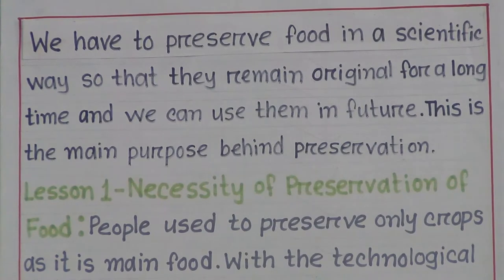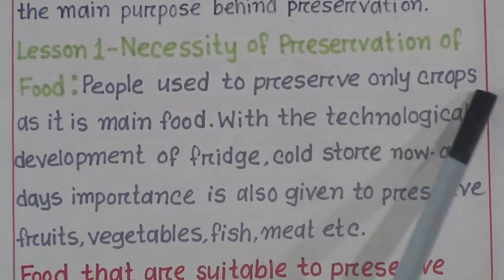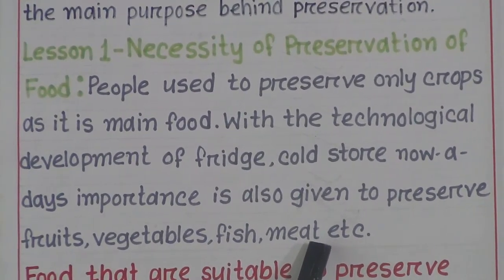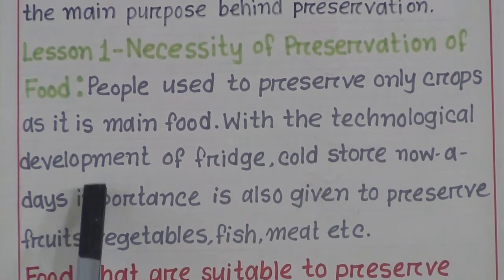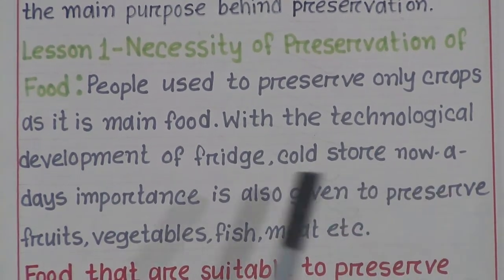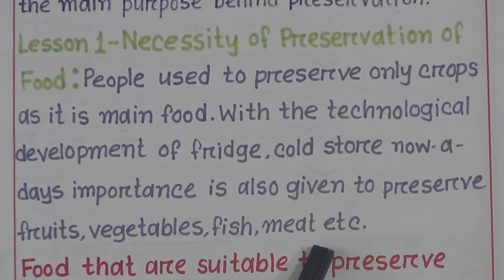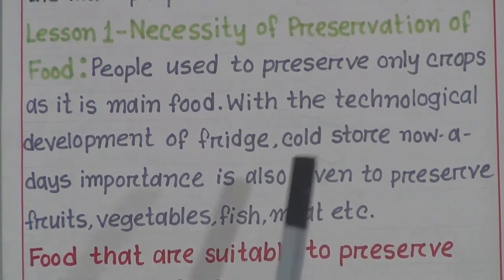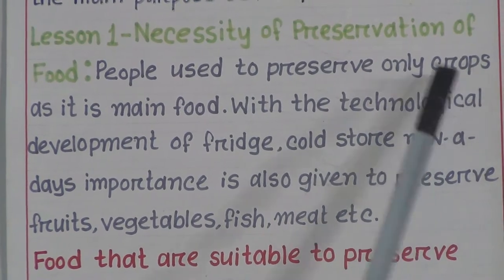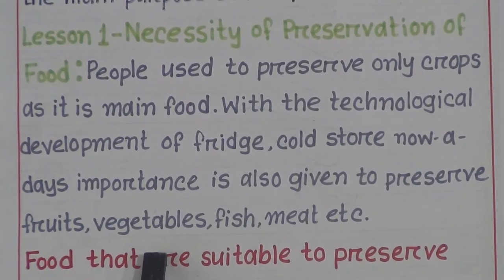Now we'll discuss lesson one: Necessity of Preservation of Food. People used to preserve only crops as it is the main food. With the technological development of fridges and cold storage, nowadays importance is also given to preserving fruits, vegetables, fish, meat, etc.